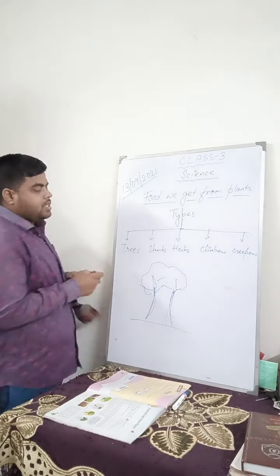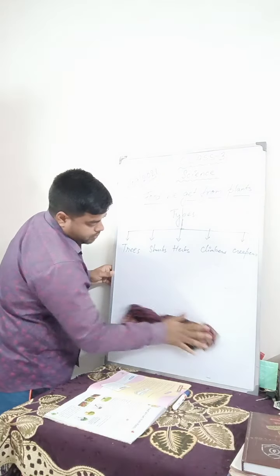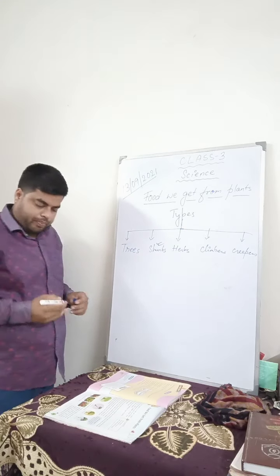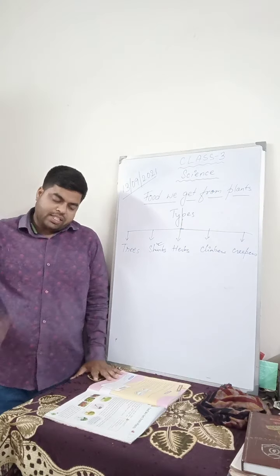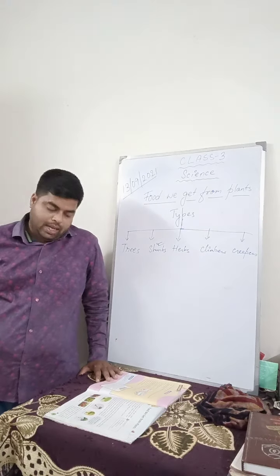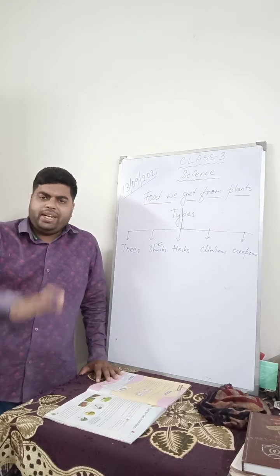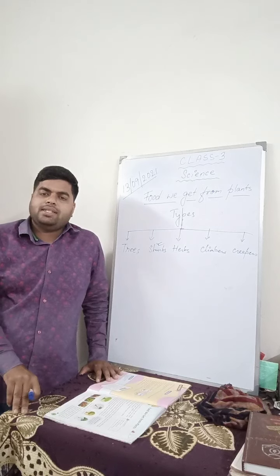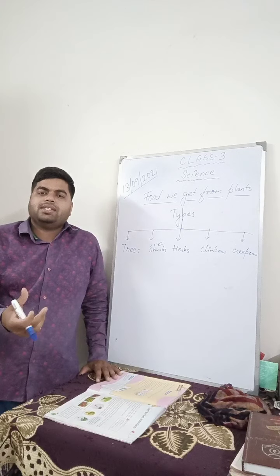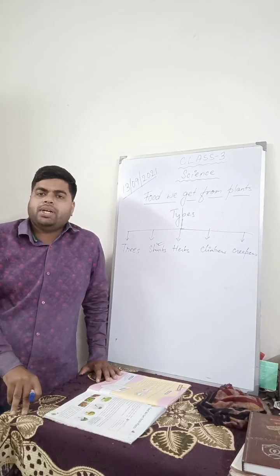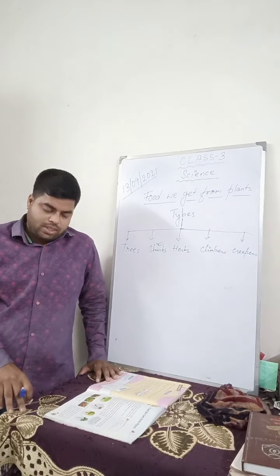The next is shrubs. Shrubs are small to medium sized plants that can live for several years. Not very small but they are medium sized plants which live for several years. They do not live for many years or they do not live for very few days or months. They live for few years or several years.